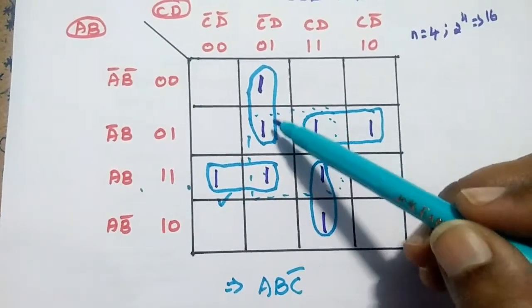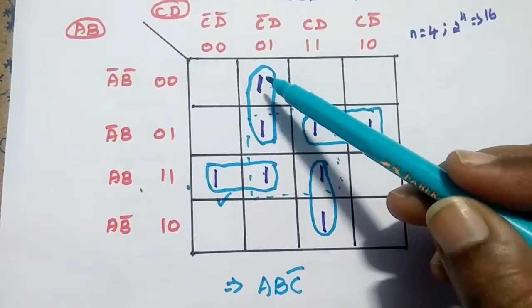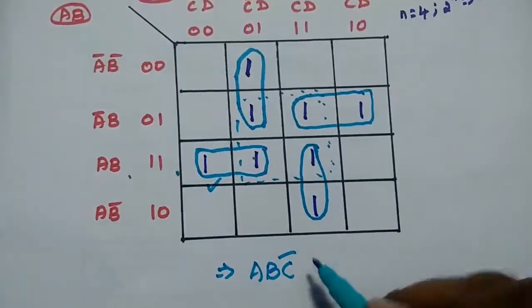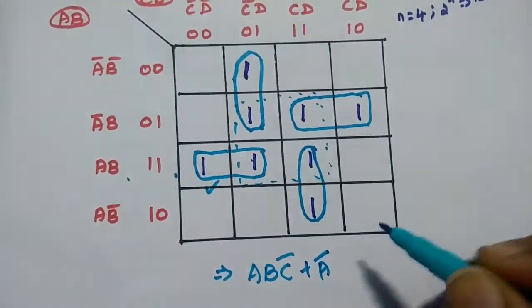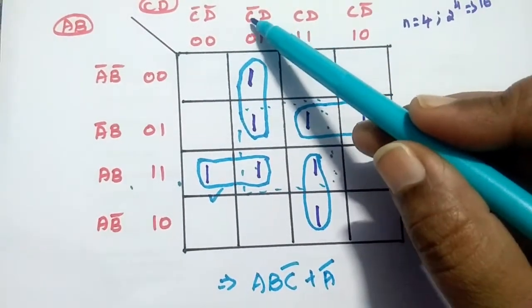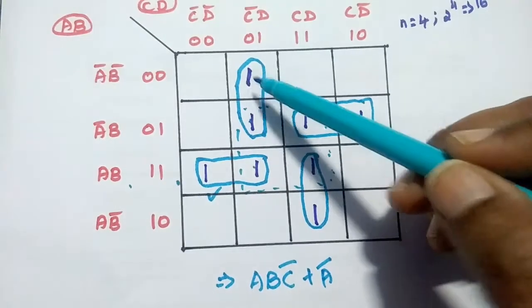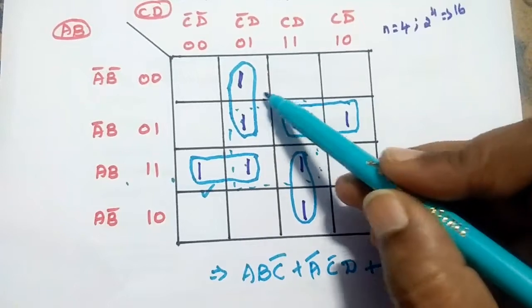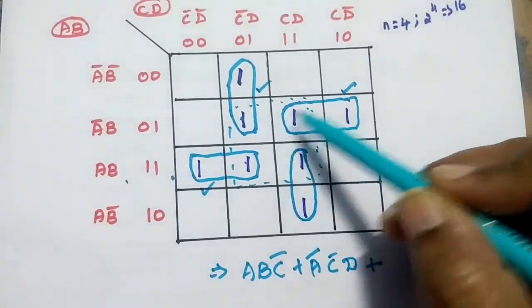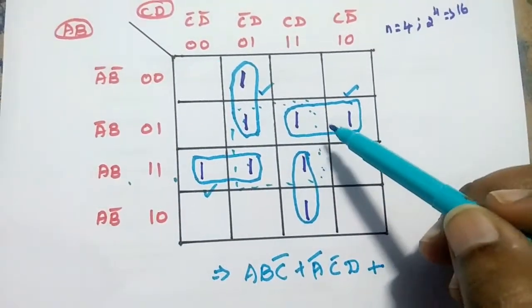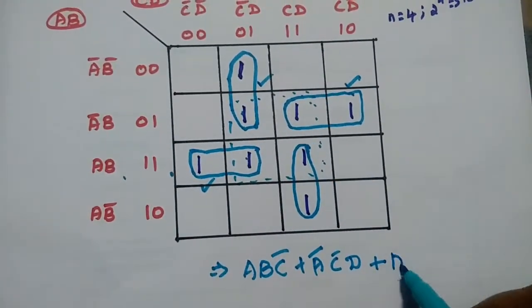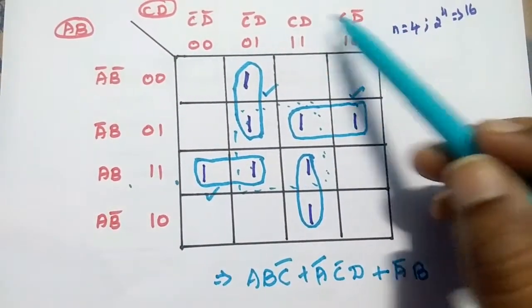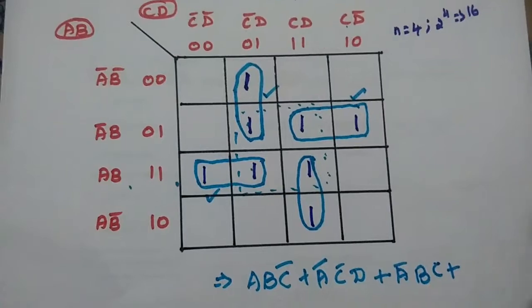For the next group, the common row value is A̅ (both cells are in A̅ rows). For the column, it is C̄D — this is common for these two 1s. So this group is written as A̅C̄D. Then for the following group, the common row value is A̅B, and for the two columns, C is common. So this group is written as A̅BC.